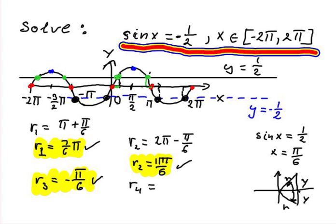Root number 4, this one here, the furthest to the left. Root number 4, I can find by using root number 1 and subtract 2π. Root number 1, which is 7 over 6, take away 2π. So 7 over 6 minus 12 over 6. So root number 4 is negative 5 over 6 π.